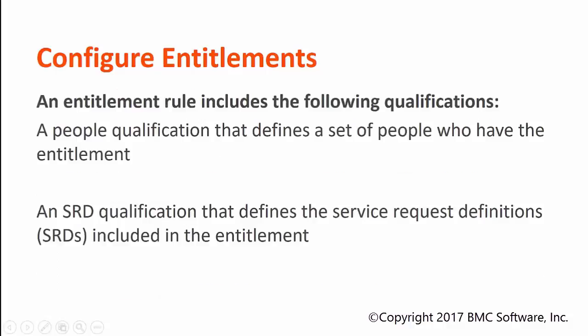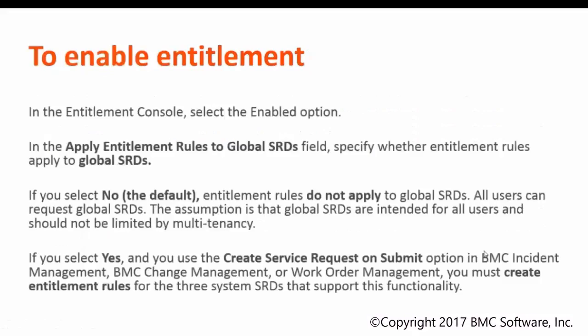An entitlement rule includes the following two qualifications. The first is the people qualification, which defines the set of people who will have that entitlement. The second is the SRD qualification, which defines the service request definitions included in the entitlement.